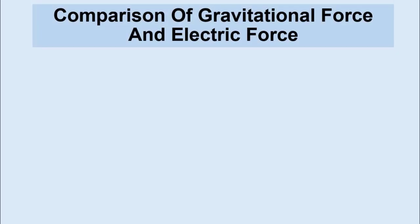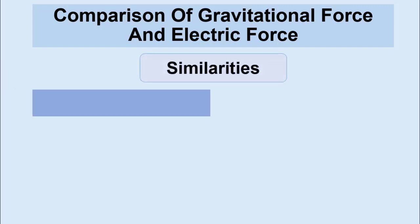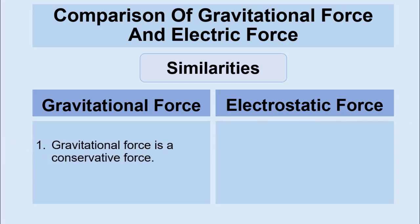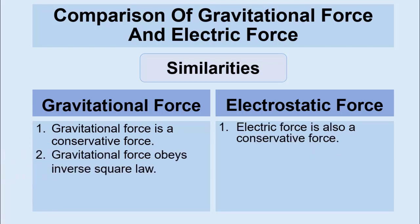Now let us see what are the similarities and differences between both of these forces. We'll begin with the similarities. The first similarity is gravitational force is a conservative force, which means that the work done by the gravitational force in the gravitational field is independent of the path followed. Similarly, electrostatic force is also a conservative force. The work done by the electrostatic force is also independent of the path followed.